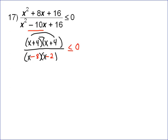Now, the numerator and the denominator are two completely different things. The numerator, we know that if x equals negative 4, you're getting a 0 up there. So x can't equal negative 4. The denominator, we know that x cannot equal 8, and x cannot equal 2.